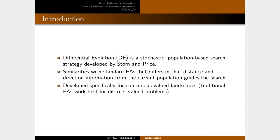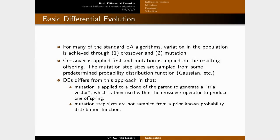Typical EAs like genetic algorithms work with discrete-valued problems — a bit string represents your solution. For many standard EAs, variation in the population is achieved through reproduction operators: crossover is applied first and then mutation is applied on the resulting offspring, and the mutation step sizes are sampled from some predetermined probability distribution function, which might be dynamic.